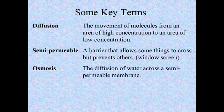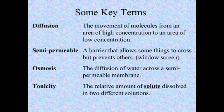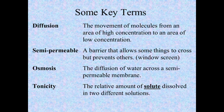Osmosis is a specific type of diffusion. Any time water moves across a semi-permeable membrane, we call that osmosis. It's basically diffusion, but in osmosis there is always a semi-permeable membrane involved. The last term to understand is tonicity. In tonicity, we're talking about a relative amount of solute, or a relative ratio of solute, between two different solutions.